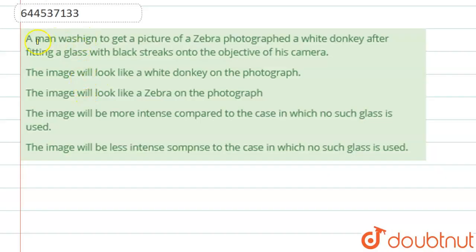Hello students, now we're going to see this question. The question says that a man wanting to get a picture of a zebra photographed a white donkey after fitting a glass with black streaks onto the objective of his camera. What will the image look like?